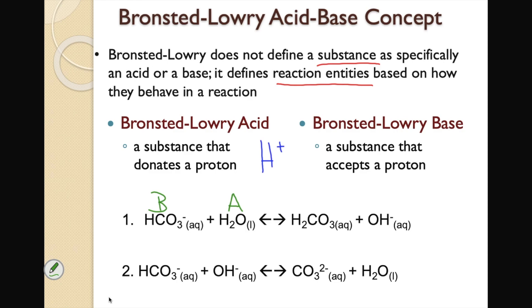In the second reaction, HCO₃⁻ plus hydroxide forms CO₃²⁻ and H₂O. Comparing reactants to products, the H from HCO₃⁻ travels over to OH⁻. So HCO₃⁻ is the proton donor — the acid — and OH⁻ is the proton acceptor — the base. That's what Bronsted and Lowry tell us with their concept.